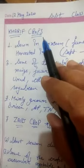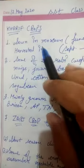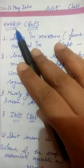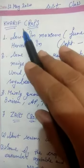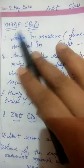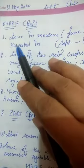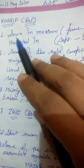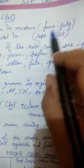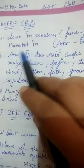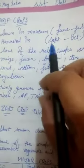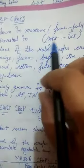Good morning class. In the last lecture we discussed Rabi crops and today we will discuss Kharif crops. These crops are sown in monsoon and harvested in September to October.